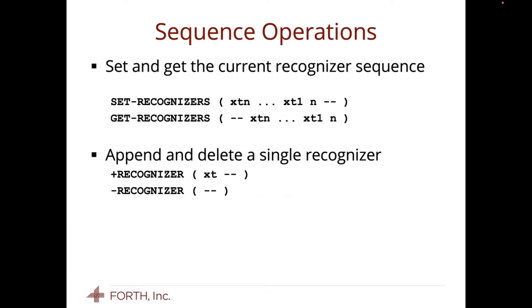And here are the sequence operators — very much like get-order and set-order. Get-recognizers and set-recognizers have the same stack effects as set-order and get-order. They take the list of all those rec-words and the number of them and put them into the list. For people who build libraries and want to add a recognizer for a while and then remove it, I also supplied plus-recognizer, which takes the execution token and appends it to the end of the stack, and minus-recognizer, which is just a pop-drop. I have a paper that is mostly done — it's on our website at forth.com/recognizers. And that is all for now.